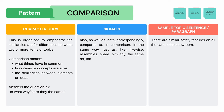Comparison is organized to emphasize the similarities between two or more items or topics. Specifically, comparison means what things have in common — how items or concepts are alike, and the similarities between elements or ideas. It answers the question: In what ways are they the same? Here is an example: There are similar safety features on all the cars in the showroom. Pause the video and look at the example. Do you see any signal words that tell you this is a comparison?